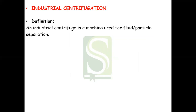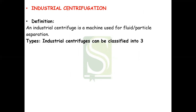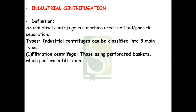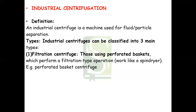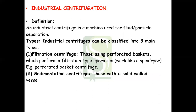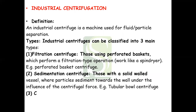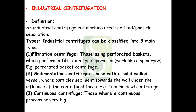An industrial centrifuge is a machine used for fluid-particle separation. It is of three basic types. The first is the filtration centrifuge, which uses perforated baskets to perform a filtration-type operation — they work like spin dryers. Example: perforated basket centrifuge. The second is the sedimentation centrifuge, with solid-wall vessels where particles sediment toward the wall under centrifugal force; example: tubular bowl centrifuge. The third is the continuous centrifuge, used where continuous operation or very high capacity is required.